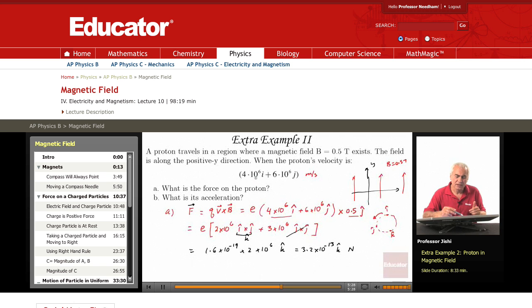Now V, the velocity, has a positive component along the x-axis, 4 times 10 to the 6, and a positive component along the y-axis, 6 times 10 to the 6. So the velocity itself looks something like this. The x component is 4 times 10 to the 6, and the y component is 6 times 10 to the 6.